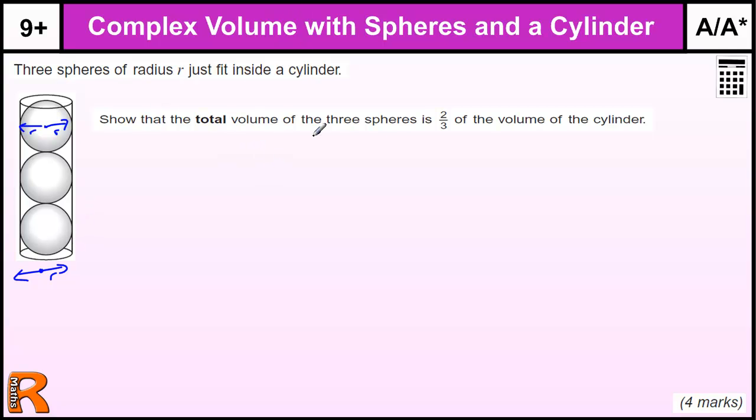We want to show that the total volume of the three spheres is two-thirds of the volume of the cylinder. We don't start off by using that two-thirds; we just need to have that at the end.